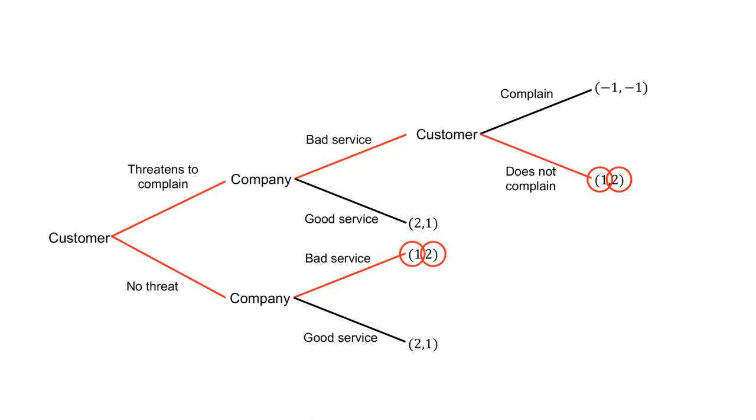What if the customer gets a strong sense of satisfaction from complaining, worth plus three? The payoffs become as follows. The threat to complain is now credible. If they receive bad service, they can complain for a payoff of two, rather than not complain for a payoff of one.